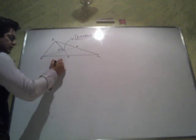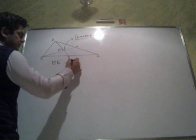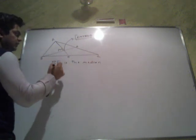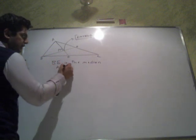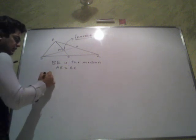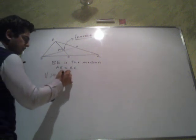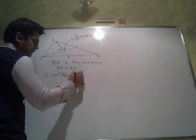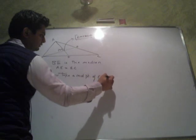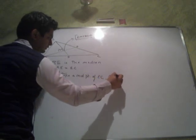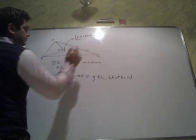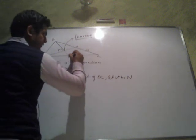Since BE is the median, therefore AE is equal to EC. Now take a midpoint of EC and let it be N. Then join B to this point N.